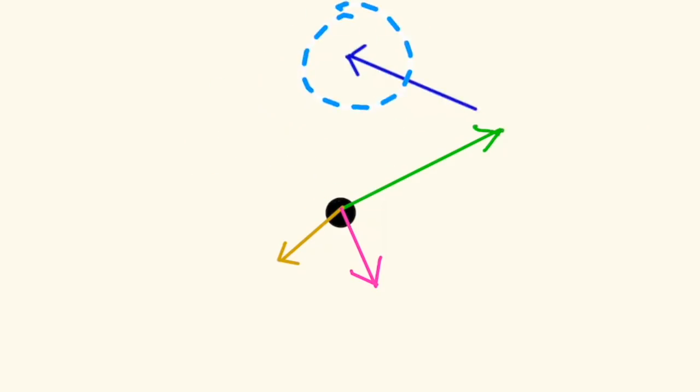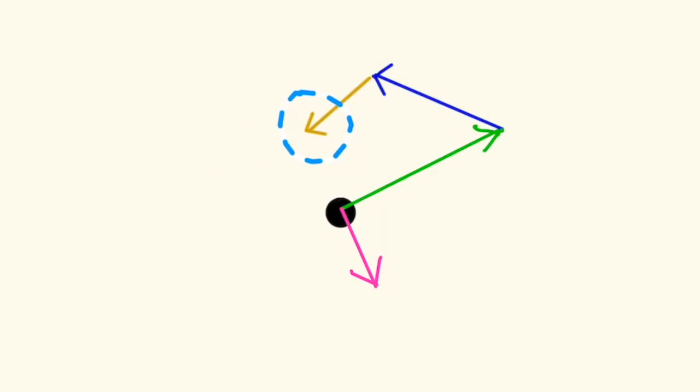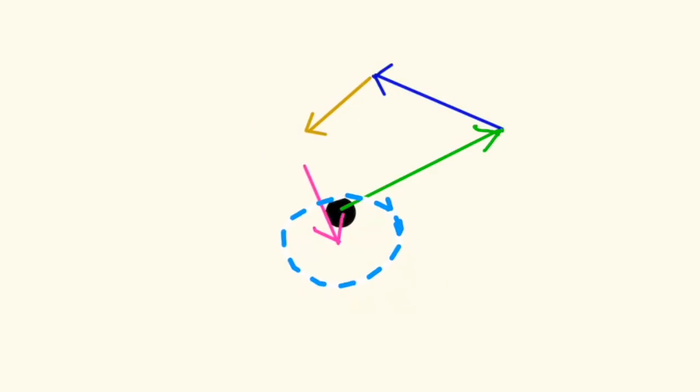As a final point about vector addition: if after you add a bunch of vectors you end up with the arrowhead of the result at exactly the base of the first vector you started with, you've made a circuit. Then we'll say that that sum is equal to zero — and that makes sense when you look at the result, because its length is zero and it has no direction at all.